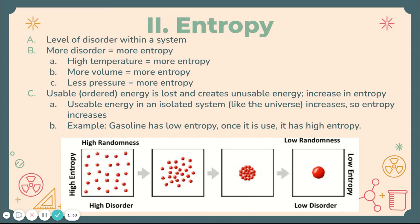Entropy is the second part, and it's the level of disorder within a system. The more randomness you have, the more entropy you have. Gas particles have the most randomness — they're the ones that fly all over the room and can go anywhere in a container. But solids have the most order; the molecules are still moving but they keep their shape and can't change shape. So solids have the least entropy because they have the most order.